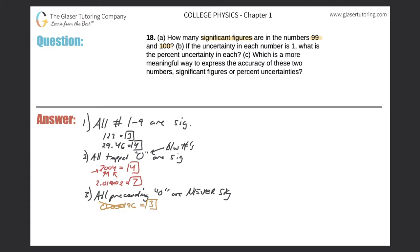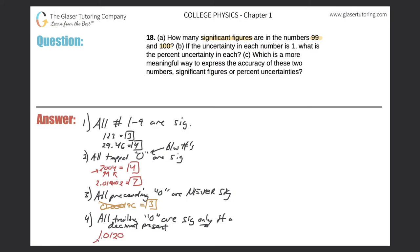Rule number four: all trailing zeros are significant only if a decimal is present. For example, the value 1.0120 — the one, one, and two are significant by rule one. The zero between them is a trapped zero, also significant. The trailing zero at the end is only significant because a decimal is present in the number. So this value has five significant figures.